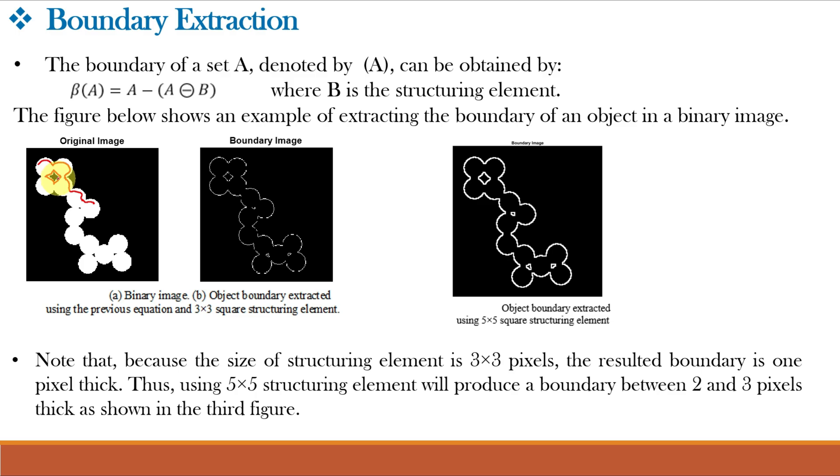Why? Because the erosion will remove pixels on the object boundary. So if we subtract the portion inside the red pen mark from the whole image, we will just get the boundary. So that is boundary extraction. So this boundary is obtained when we are using a 3x3 structuring element.